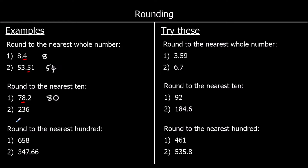And 236 — again, we're rounding to the nearest 10. So we look at the next column down, the ones. Is it 5 or above? Yes, it is. So round up. So 236 is going to round to 240. It's closer to 240 than it is to 230.